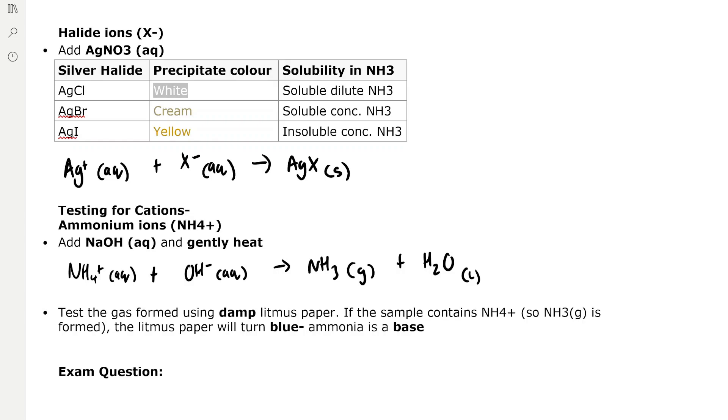To improve the test we can differentiate by the solubility of the precipitates in ammonia. Silver chloride is the most soluble because it's soluble in dilute ammonia. Silver bromide is the second most soluble because it's soluble in concentrated ammonia but insoluble in dilute ammonia. Silver iodide is the most insoluble because it's insoluble even in concentrated ammonia.